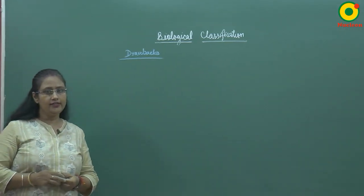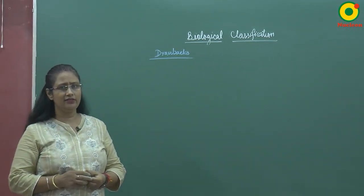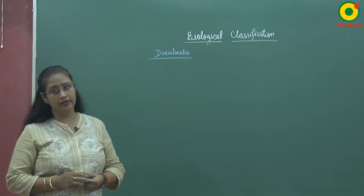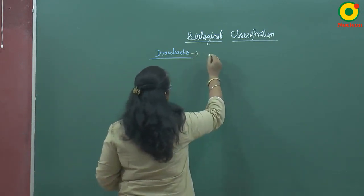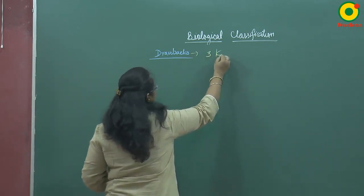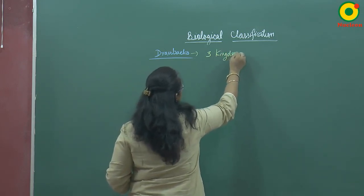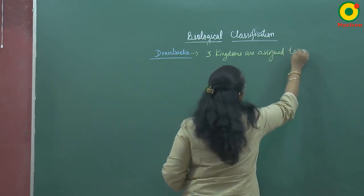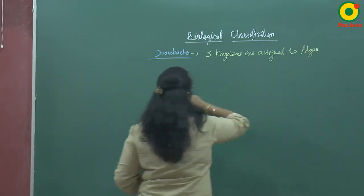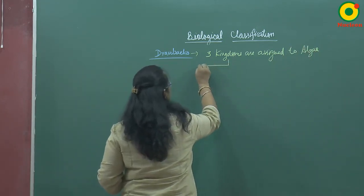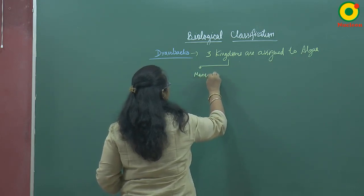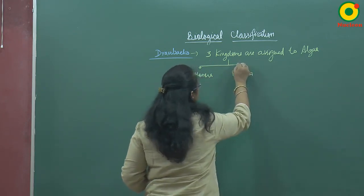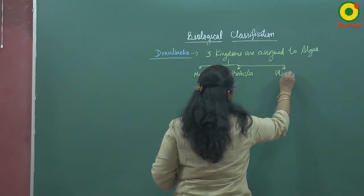Now let's see the drawbacks of Whittaker's system of classification. There are several drawbacks. The first drawback is that he assigned algae to three kingdoms: Monera, Protista, and Plantae.